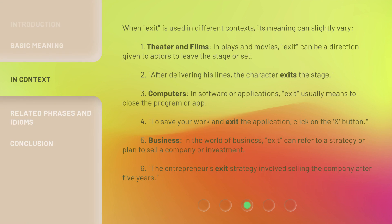When 'exit' is used in different contexts, its meaning can slightly vary. In theater and films, 'exit' can be a direction given to actors to leave the stage or set — for example, 'After delivering his lines, the character exits the stage.' In computers, 'exit' usually means to close a program or app — 'To save your work and exit the application, click on the X button.' In business, 'exit' can refer to a strategy or plan to sell a company or investment — 'The entrepreneur's exit strategy involved selling the company after five years.'